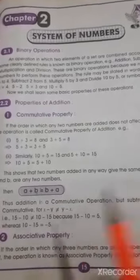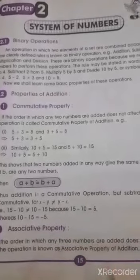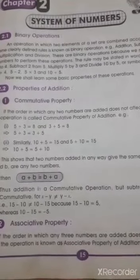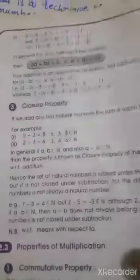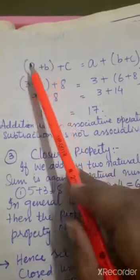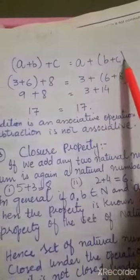The second property is associative property of addition, in which any three numbers are added and it does not affect the result. The operation is known as associative property of addition. For example, (a plus b) plus c is equal to a plus (b plus c).